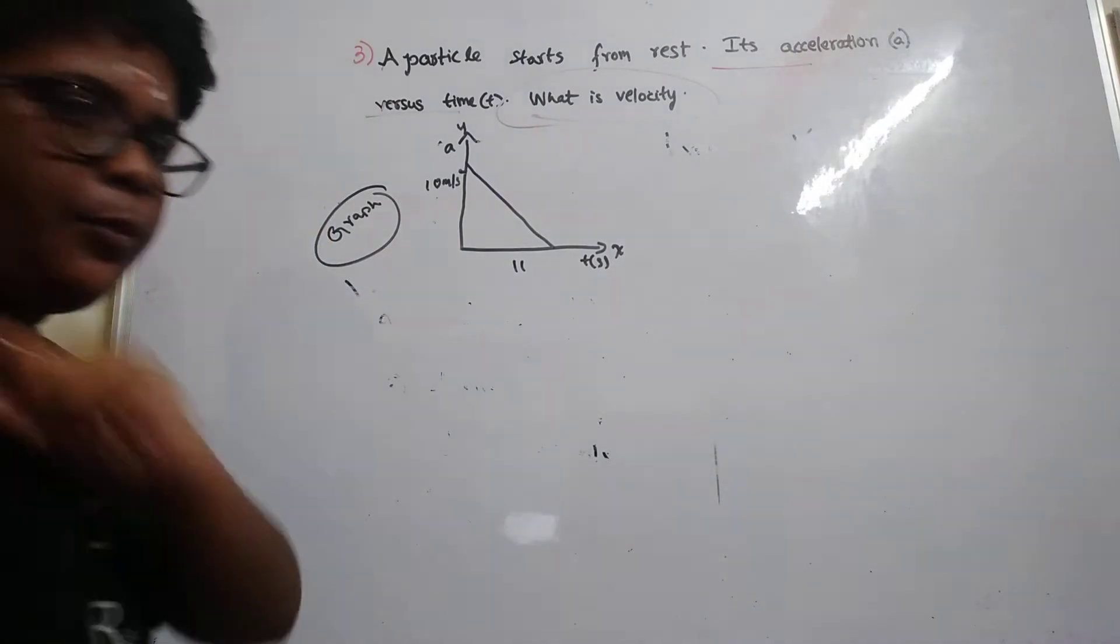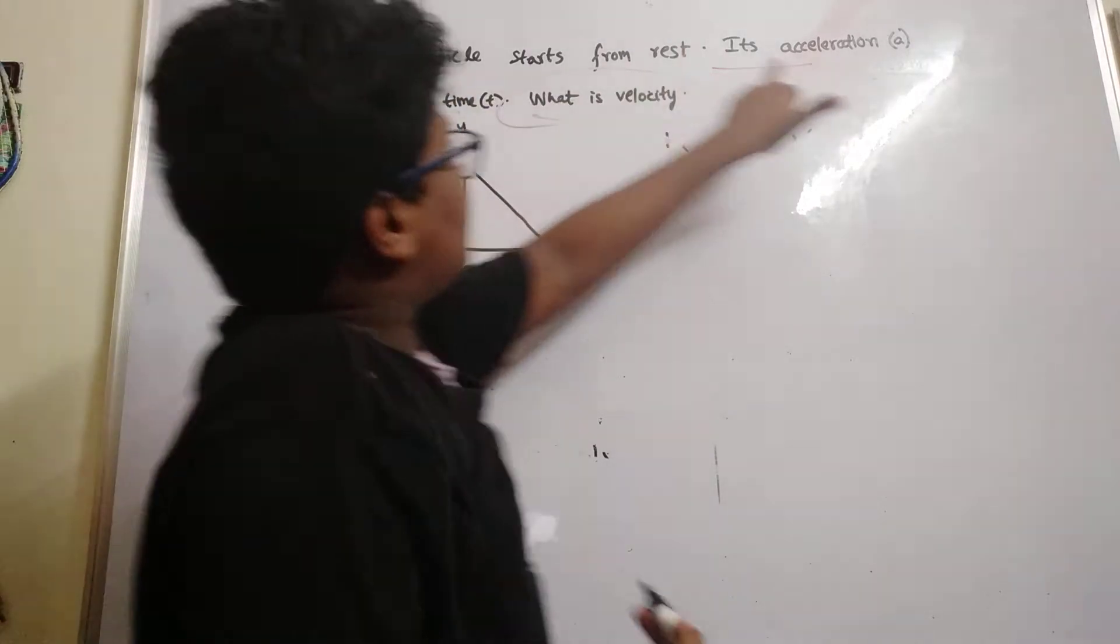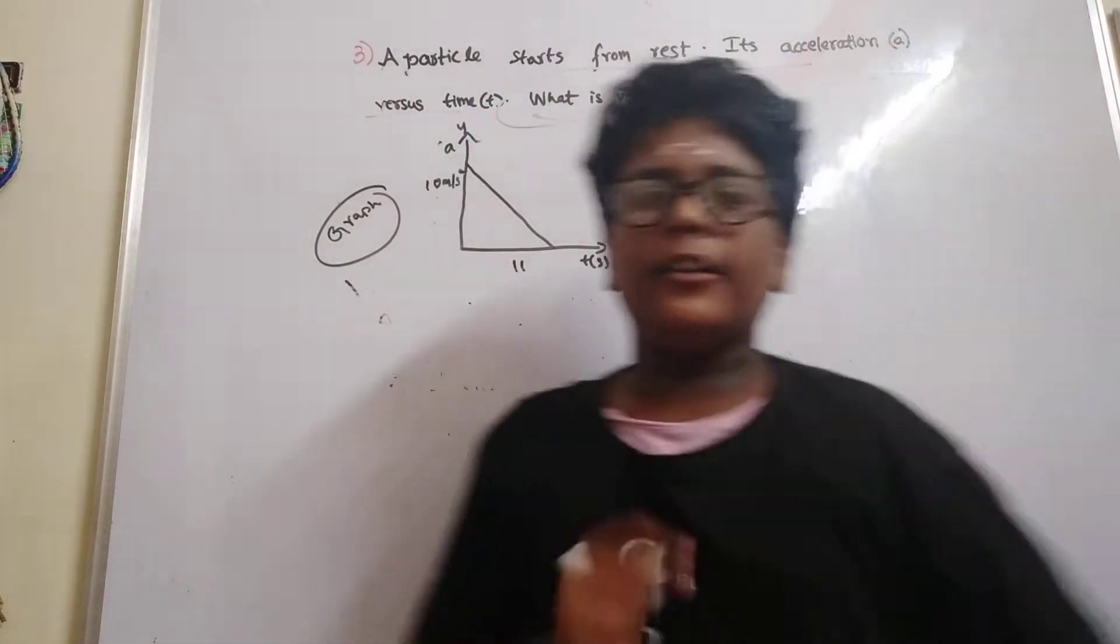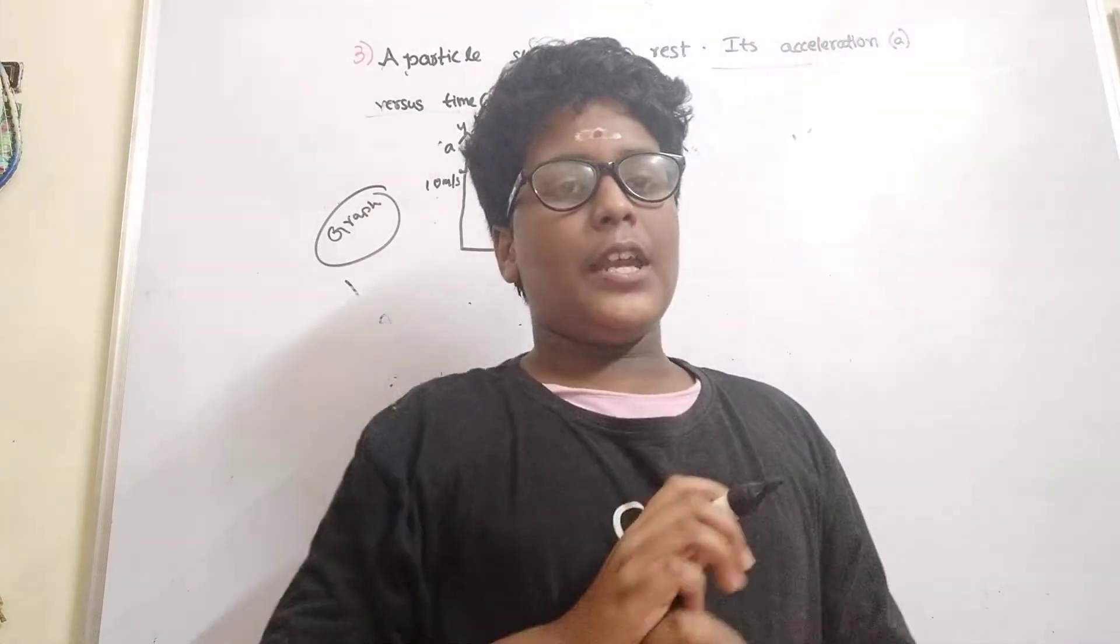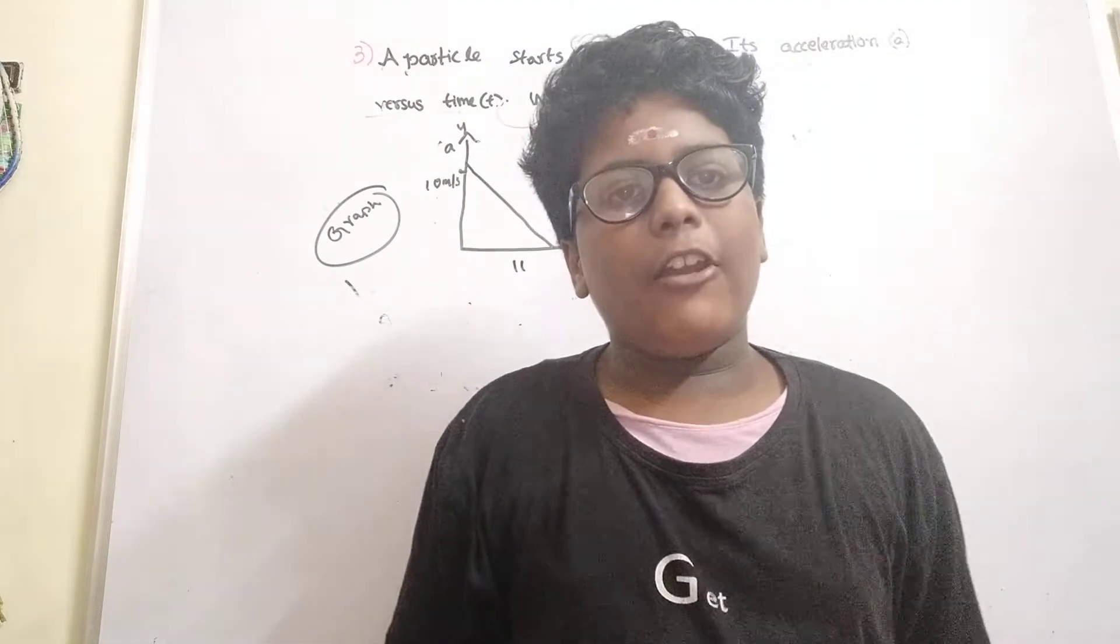In Exercise 3, the particle starts from rest. In equations of motion, starting from rest means initial velocity is zero.